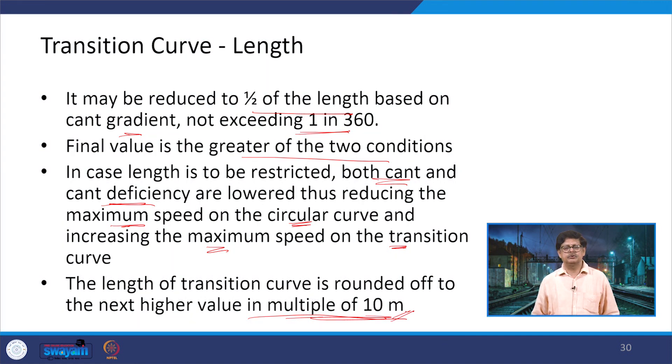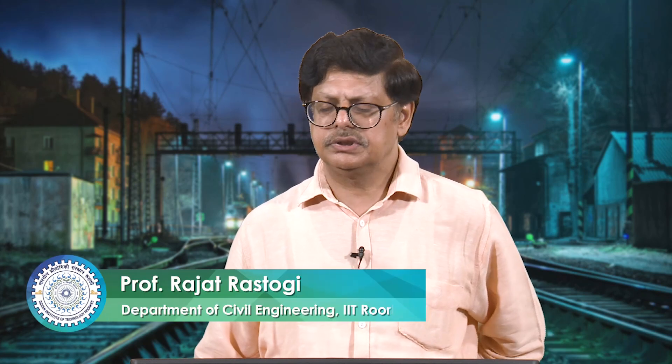With this we close the discussion. We covered negative cant, then the purposes and requirements for the provision of transition curves, the various types of transition curves, and the three methods for calculating the length of the transition curve. Thank you, and we will meet in the next lecture.